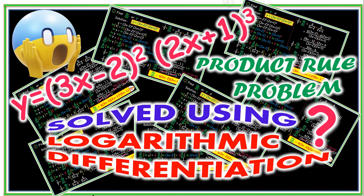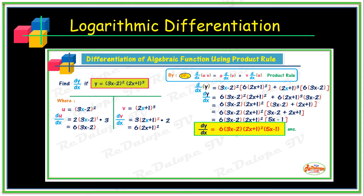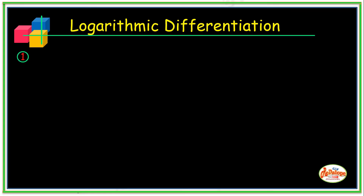In our previous uploaded video, we were able to find the derivative of algebraic functions using the product rule. But in this video, we will solve the same problem with the application of logarithmic differentiation and find out which is the easiest solution. Let's go over to my slides. This is the solution of the problem we solved using the product rule, with the given (3x - 2)² and (2x + 1)³.